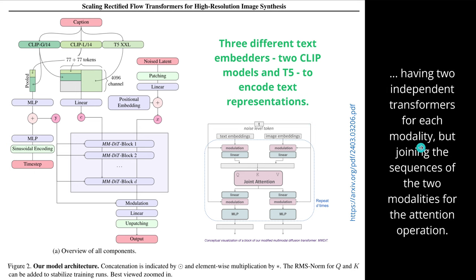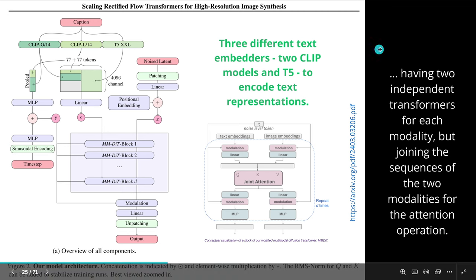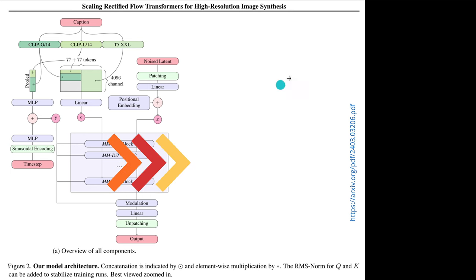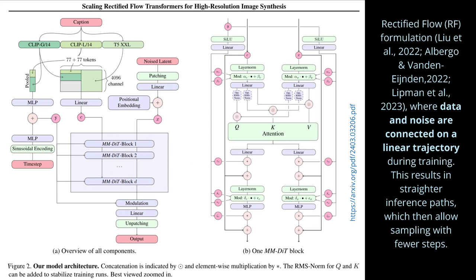Having two independent transformers for each modality — text and image — but joining the sequences of the two modalities for the attention operation, as the authors officially describe it. If you look at the block in more detail with its mathematical operations, the rectified flow formulation is not really visible there, because it is more of a theoretical concept. The rectified flow formulation connects data and noise on a linear trajectory during training. The important word here is linear — and the trajectory refers to the path inside the diffusion transformer architecture.